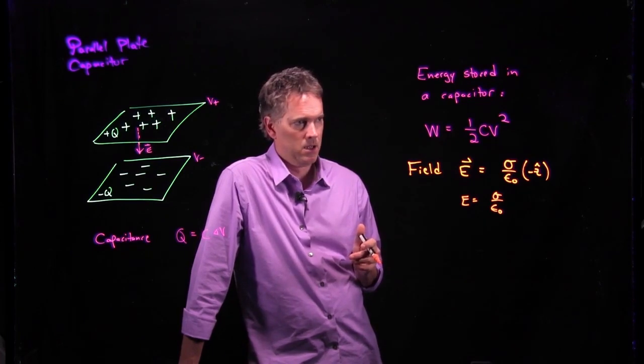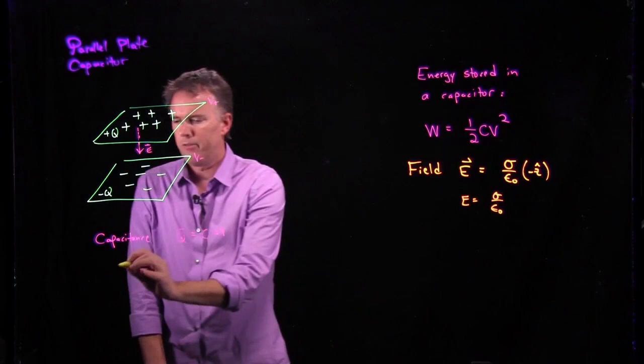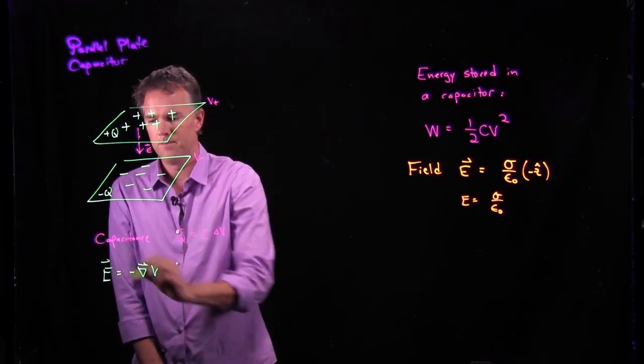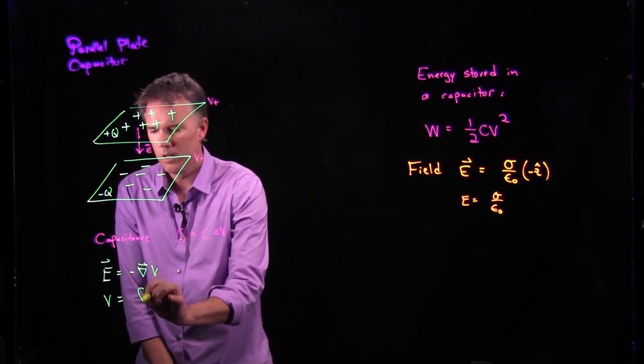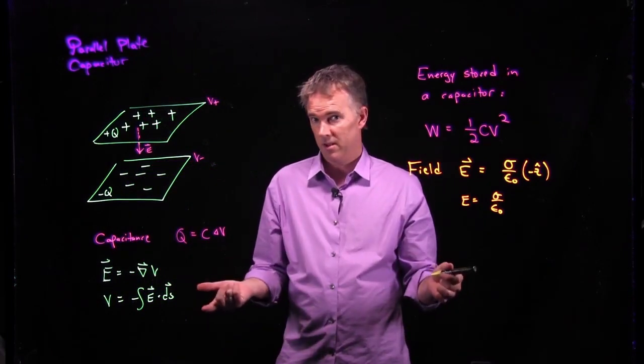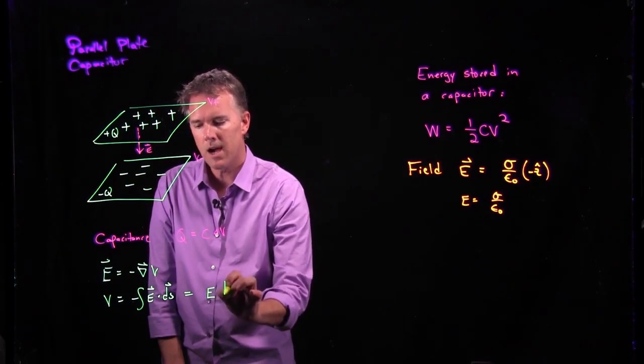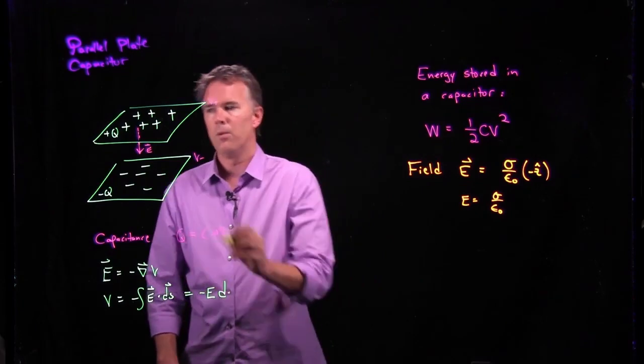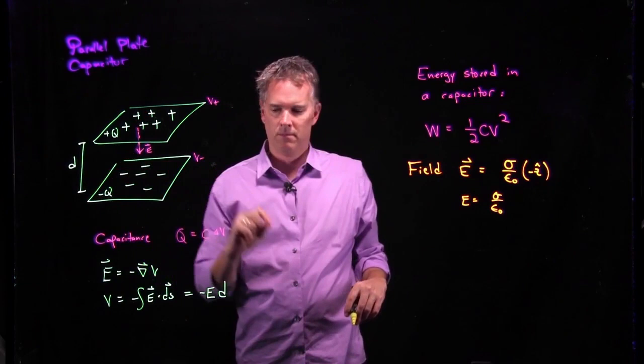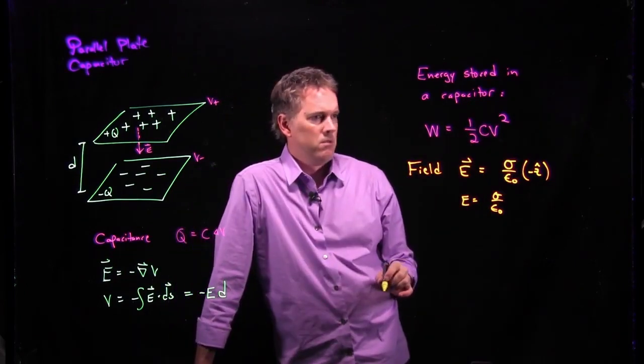All right. But I can relate that to the voltage. Sure. Because we know that the electric field is negative del V or V equals negative integral of the electric field. But the electric field in this case is just a constant. And so that can come out of the integral and this whole thing just becomes E times the separation D with a negative sign, where this is the separation between the plates D. What's the voltage? It's just E times D. That looks pretty cool. I wonder if I can relate that back to this stuff over here.